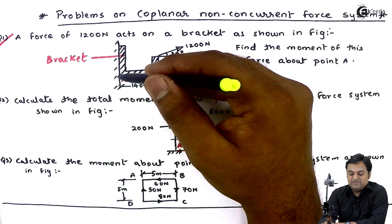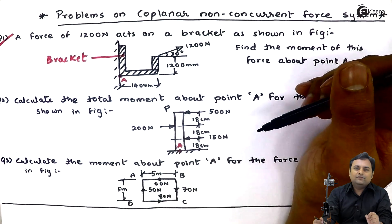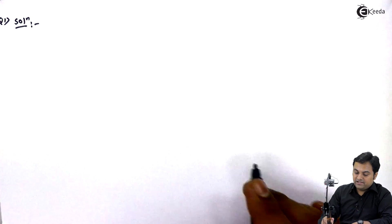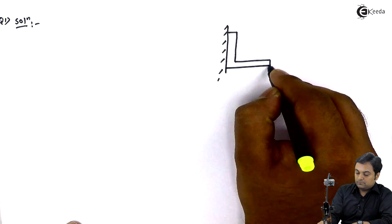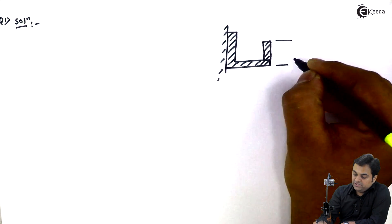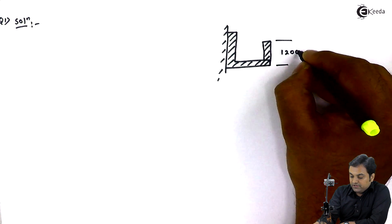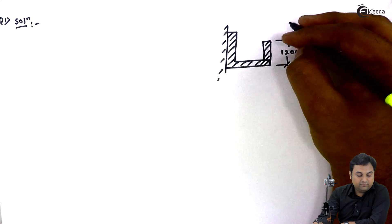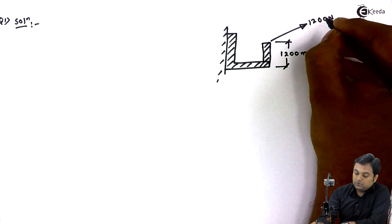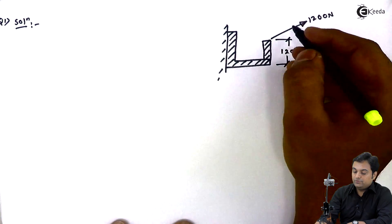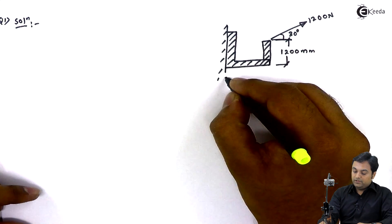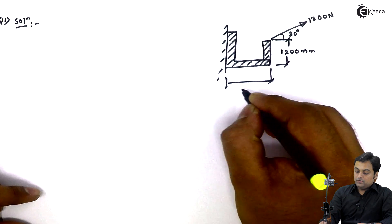Now let us see how we can solve this problem. I will write the solution by first drawing the diagram of the bracket. The vertical height is 1200 mm, with a load of 1200 Newton inclined at 30 degrees. The horizontal length of the bracket is 140 mm.